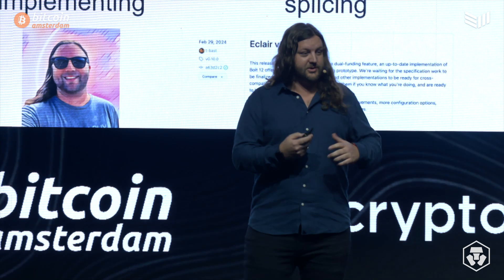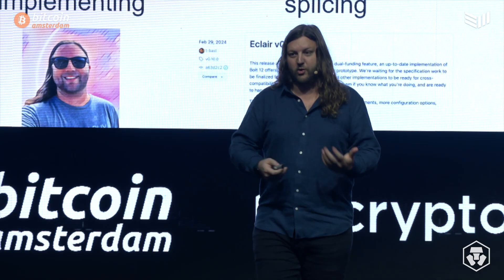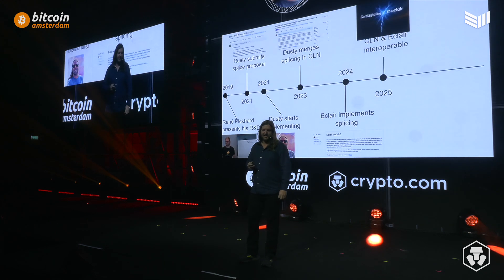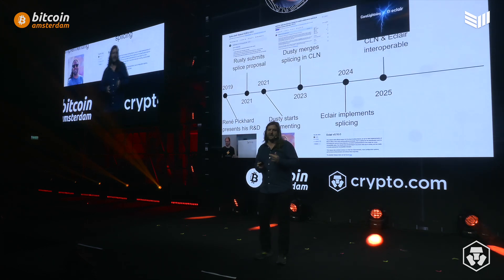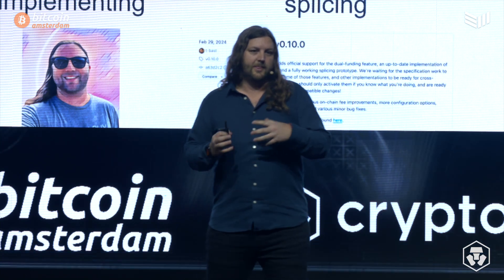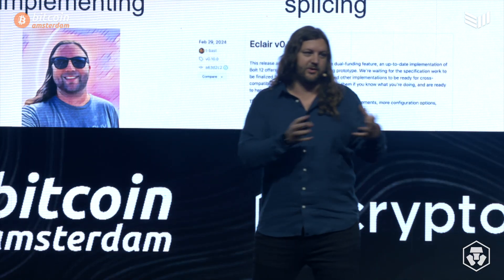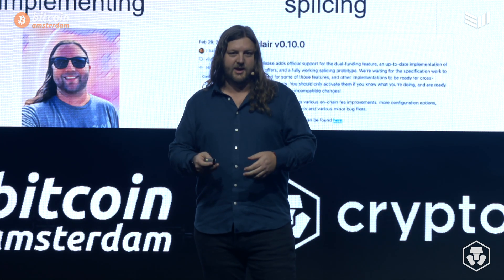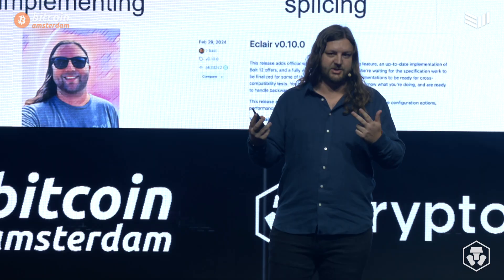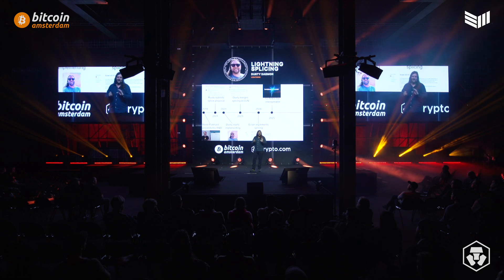Shortly afterwards, Eclair — T-Bast's company — implemented it as well, so things started moving quickly at that point. This is their release notes for when they released it. This is the key step in Lightning: the Lightning spec works differently than, say, the Bitcoin Core spec, where Bitcoin Core has a BIP before writing the code. Lightning does it in reverse — if you want your spec to be part of the Lightning spec, you have to build it first and then get it merged in. One precursor is you must have two Lightning implementations that both support the feature. CLN and Eclair got interoperability, and it's going to get merged into the spec any day now.